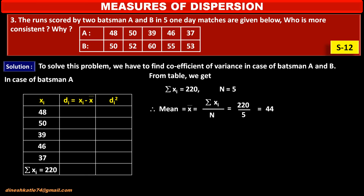Now using this mean x̄, we find deviation di for each value of xi. For the first observation, xi is 48 and x̄ is 44, so 48 minus 44 equals 4.